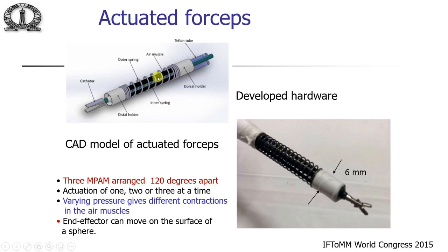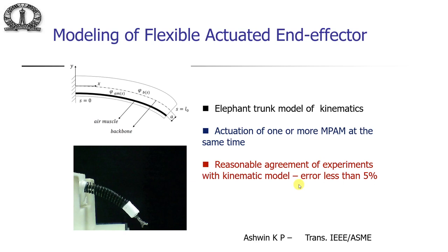This CAD model was implemented in hardware — the assembly is about 7 mm diameter — consisting of three artificial muscles, a grasper, and a small actuating tube. The whole assembly moves on the surface of a hemisphere when the artificial muscles are pressurized.